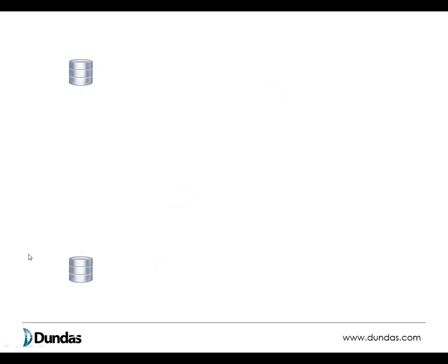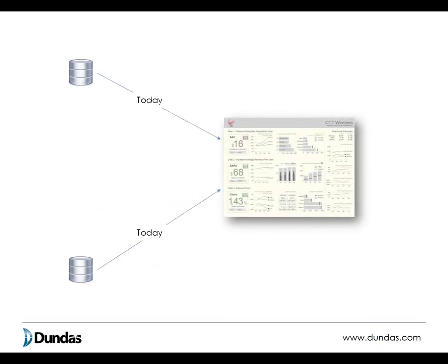Ideally, what we want is data fed into a single point of truth — something that would take data and perhaps have additional data added as needed, but the idea is that you have this single point where all data points are always updated. Everybody is looking at the same data and making their decisions based off the same information. This is the kind of consistency that people are really struggling with, and this is often why people would be contacting us — they need some help to get to this goal.